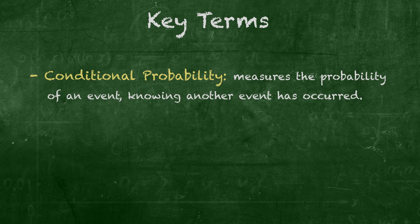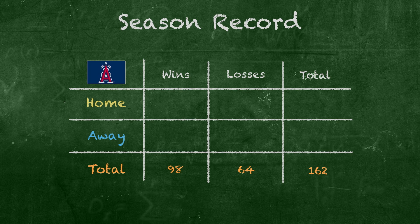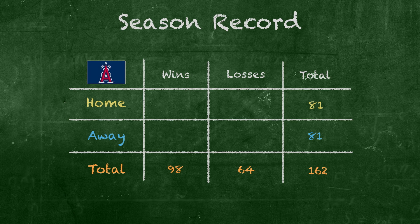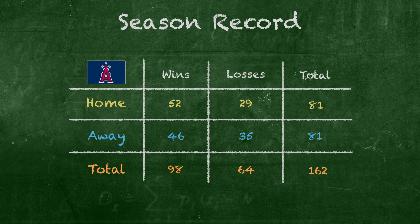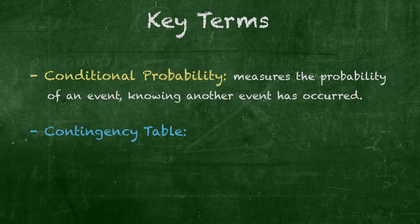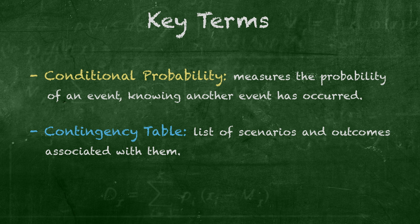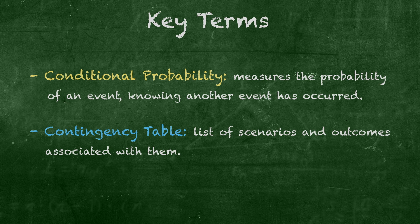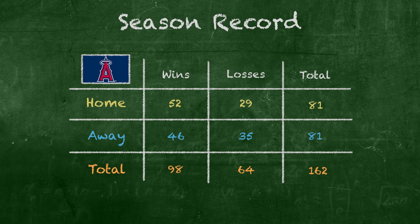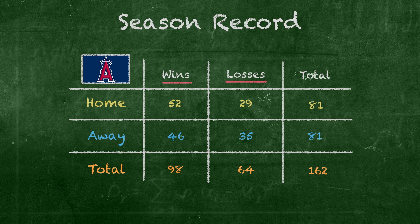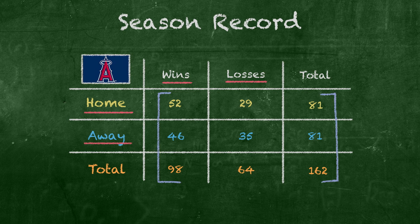Take a look at the Los Angeles Angels of Anaheim. In a recent season, the Angels played a total of 162 games — 81 at home and 81 away. Angels were 52 and 29 at home and 46 and 35 on the road. I see you're displaying these data on a contingency table — just a fancy name for the list of different scenarios and the probabilities associated with them. There are two qualitative variables in the data: whether the game is a win or loss, and whether the game is home or away. The quantitative variables in the table would be the number of wins and losses.